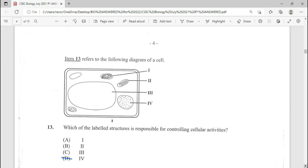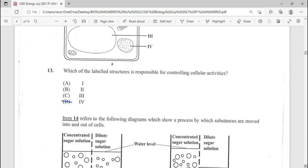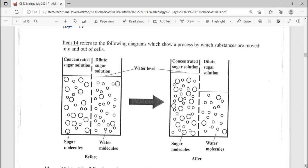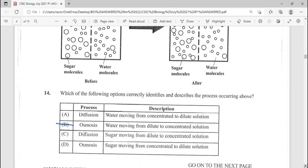Number 13, which of the labeled structure is responsible for controlling cellular activity? Here, the answer is going to be D for the nucleus. Number 14, reference to the diagrams that we are looking at, which of the following option correctly identifies and describe the process occurring? Going to be B and of course, remember, you can pause the video to read or to observe the diagrams carefully.